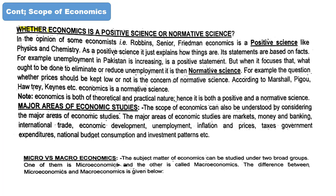The next question is whether economics is a positive science or a normative science. Robbins and Senior consider economics a positive science, while Keynes, Marshall, and Pigou consider it a normative science.